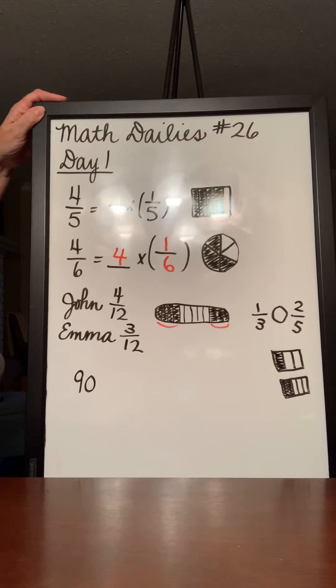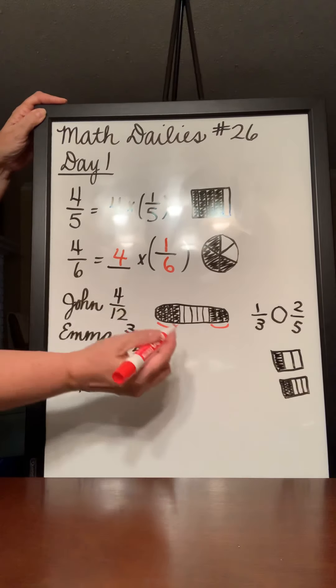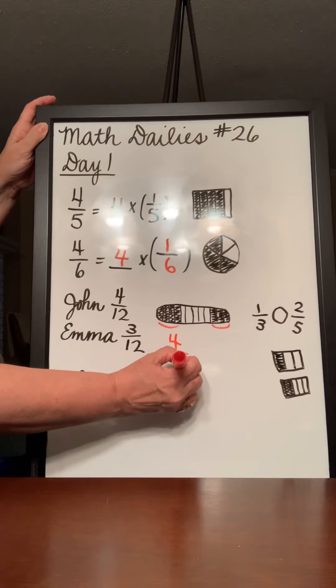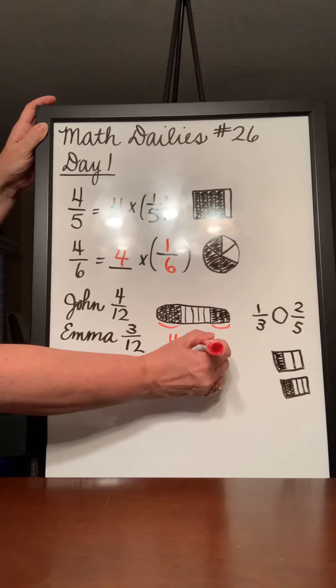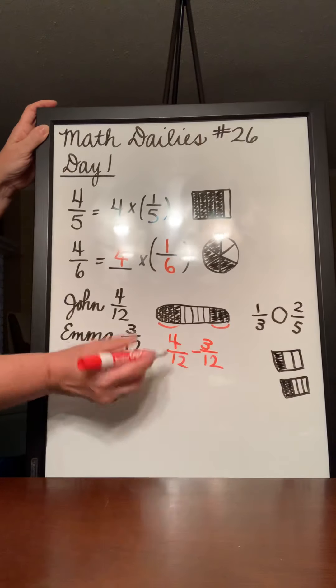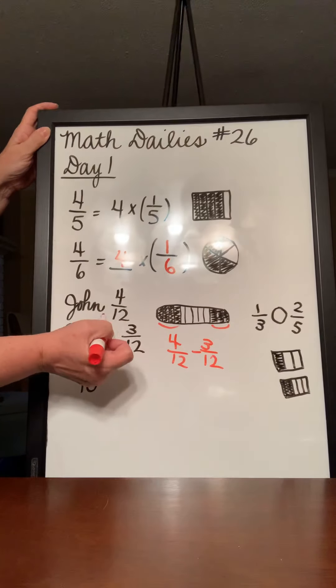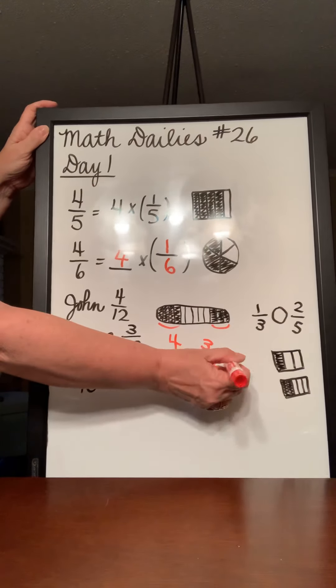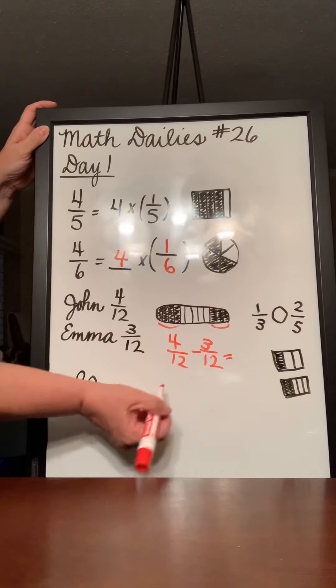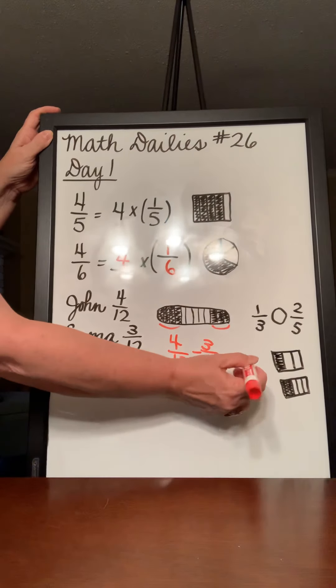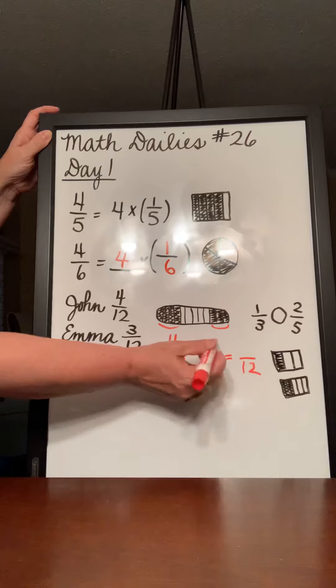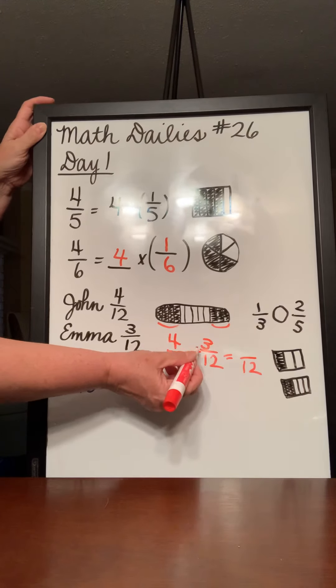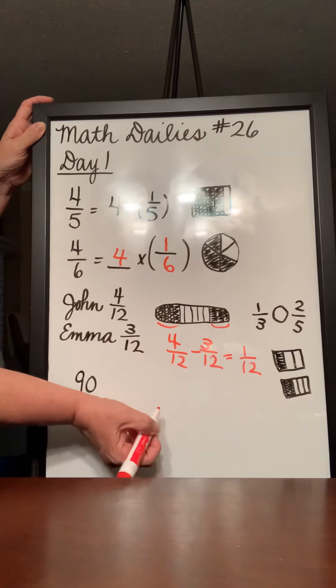But it's saying how much more did John eat than Emma? Well, we know how much more than lets us know we need to do what operation? Subtract, right? So we do 4 twelfths minus 3 twelfths, the bigger number, 4 twelfths, minus the small number, 3 twelfths. And we subtract. And we know because our denominator is the same, we're just going to keep our denominator, and we're just going to work with the numbers on top, the numerators. So we say 4 minus 3, and that gives us 1.